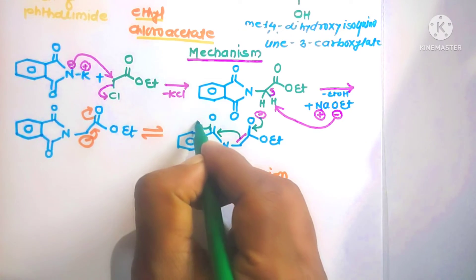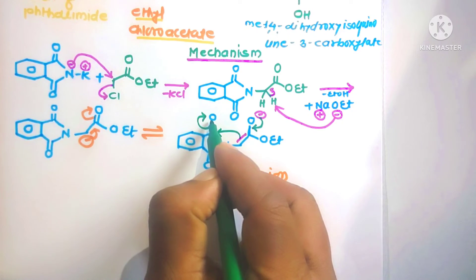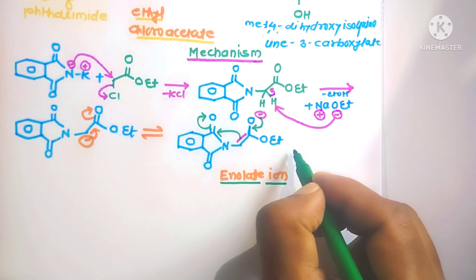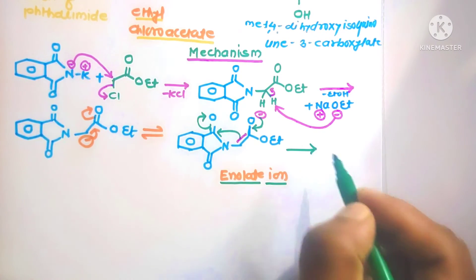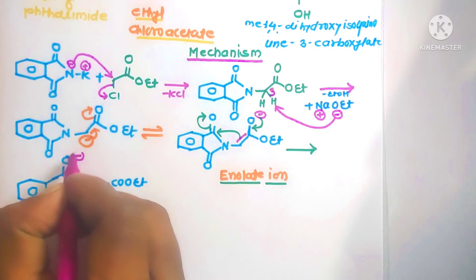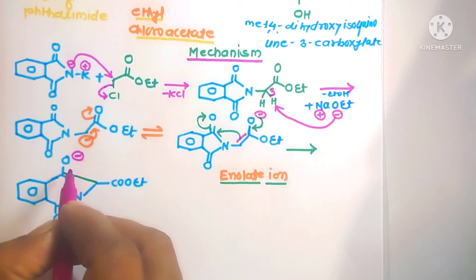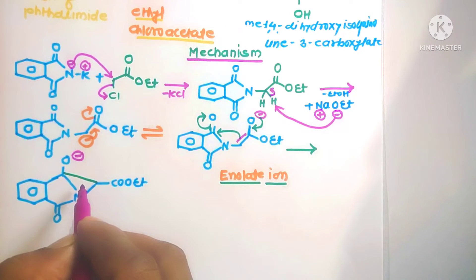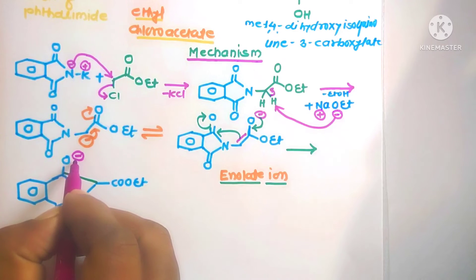The bonding electrons shift toward the more electronegative oxygen atom to form a molecule, resulting in the formation of a highly strained three-membered ring structure. This molecule is highly unstable.